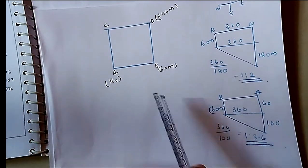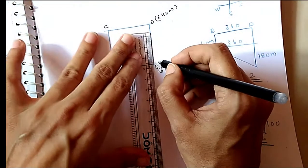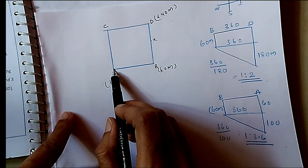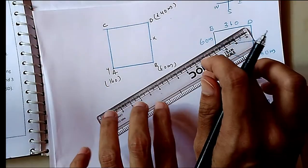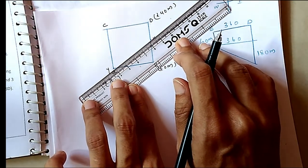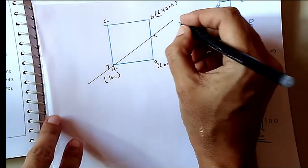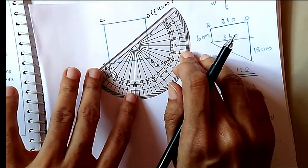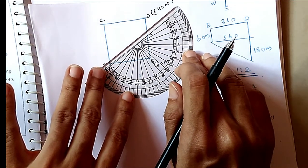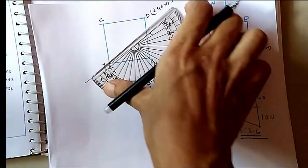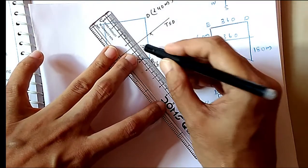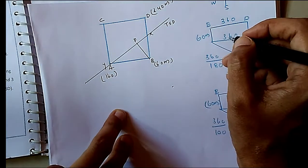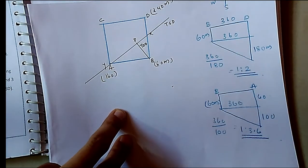Join X and Y — this is our TSD (True Strike Direction) line. Now draw the True Dip Direction line, which is perpendicular to the strike line. Keep your protractor parallel to the strike line and draw the perpendicular passing through point B to get the True Dip Direction line. Label this line BP — BP is our True Dip Direction line and XY is the TSD line.